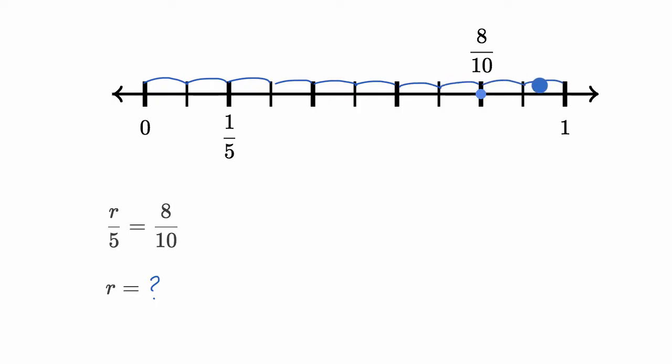seven, eight, nine, ten equal jumps. And at this point, we have gone eight of those ten equal jumps between zero and one. So that is eight tenths.